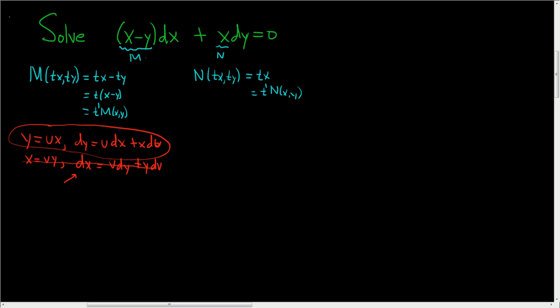So now we'll carefully, very carefully make the substitution. So we still have x, so we have x and then minus and then y is ux, so ux and then dx plus,